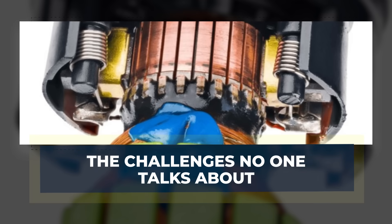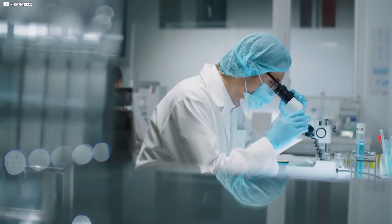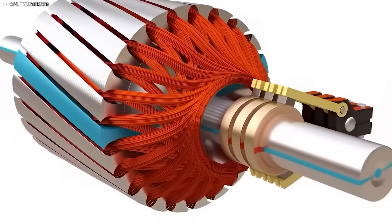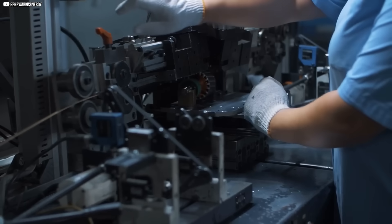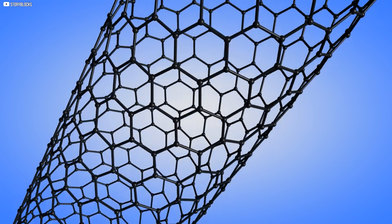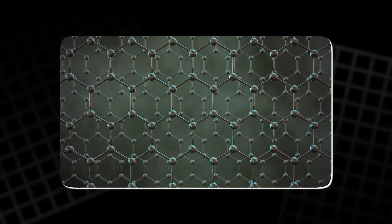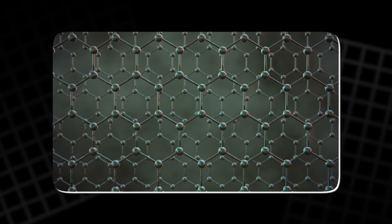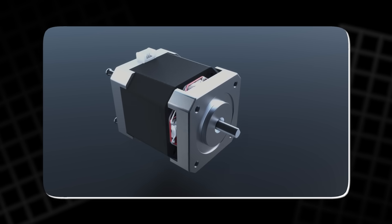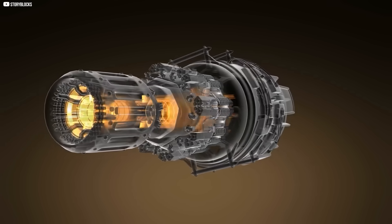The challenges no one talks about. For every breakthrough, there's always a reality check. And this carbon-based motor technology is no exception. The first big hurdle is manufacturing. Producing carbon nanotubes at scale is still difficult and expensive. Aligning them with the level of precision needed for high-performance electrical conduction is even harder. The LAST process, while groundbreaking, adds multiple steps that drive up production time and cost.